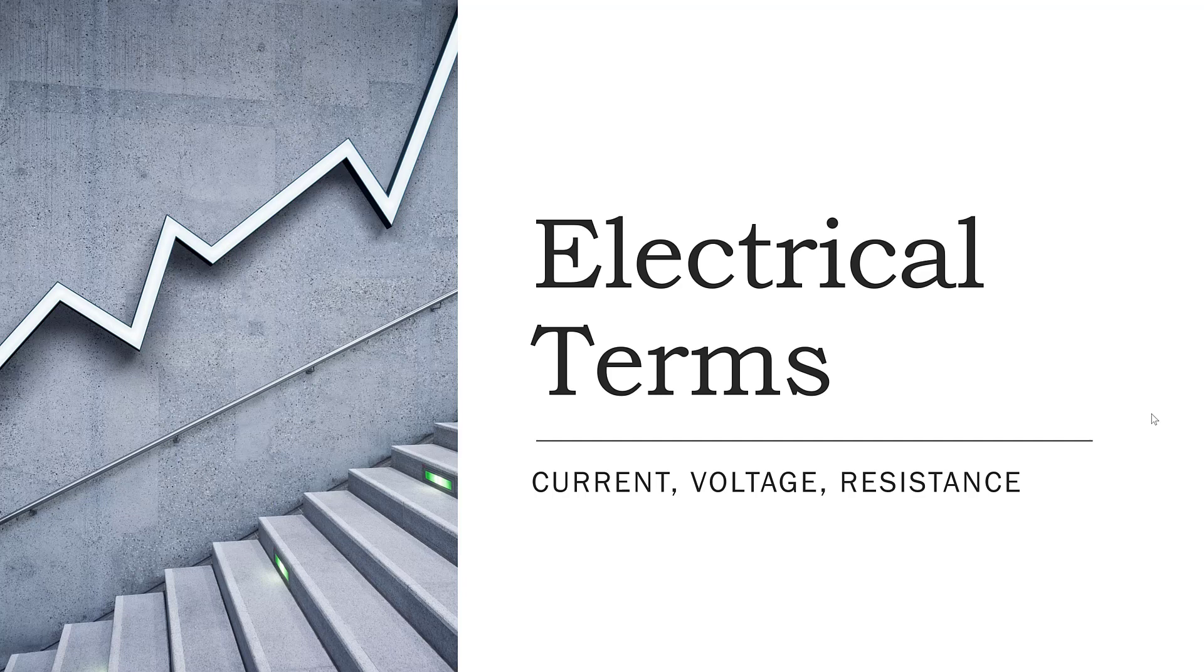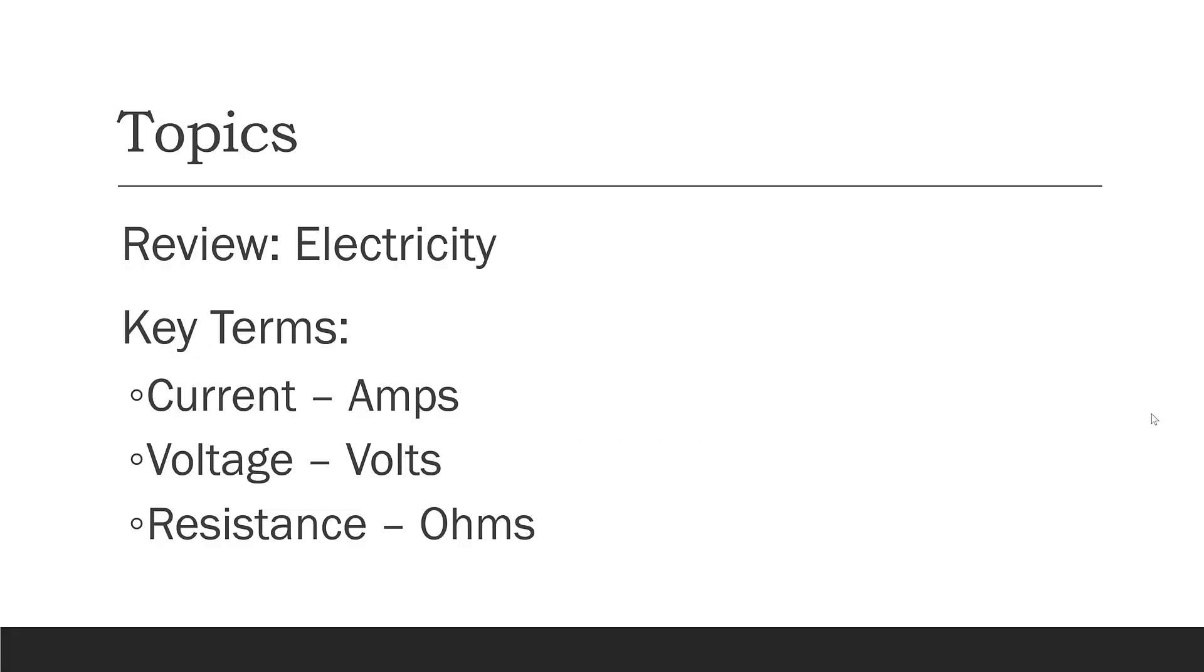Today we're going to talk about some key terms in electricity: current, voltage, and resistance. We're going to start by reviewing what electricity is. We talked about this in a previous video, so you can check that out, but we're going to review it quickly here. Then we'll talk about our key terms—current, voltage, and resistance—and the units for those terms: amps, volts, and ohms.